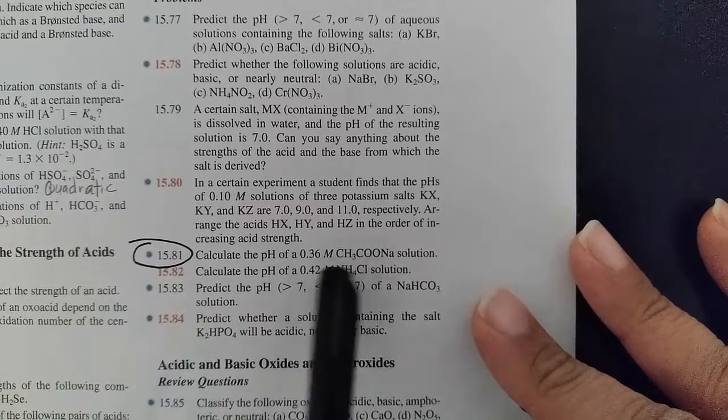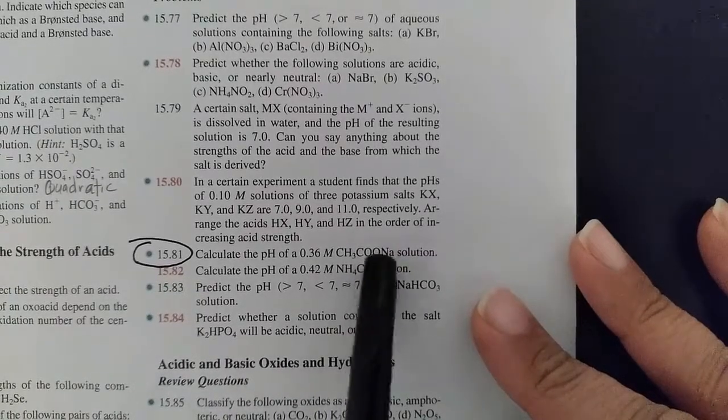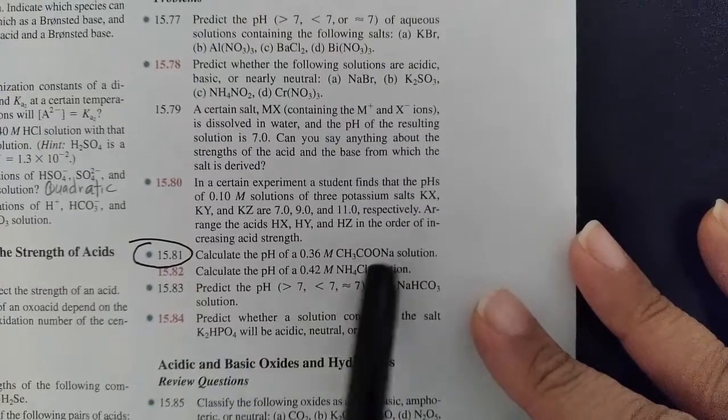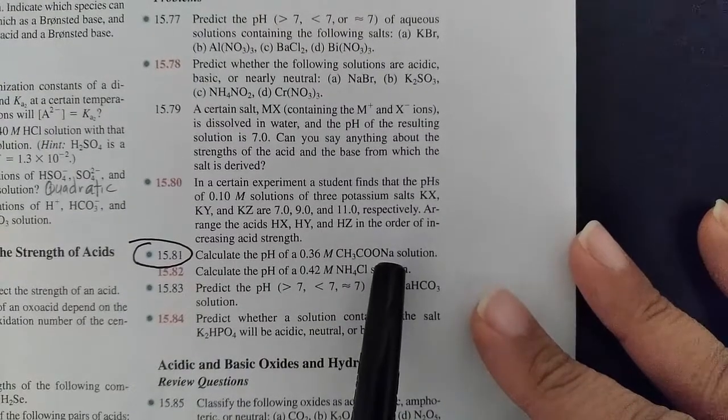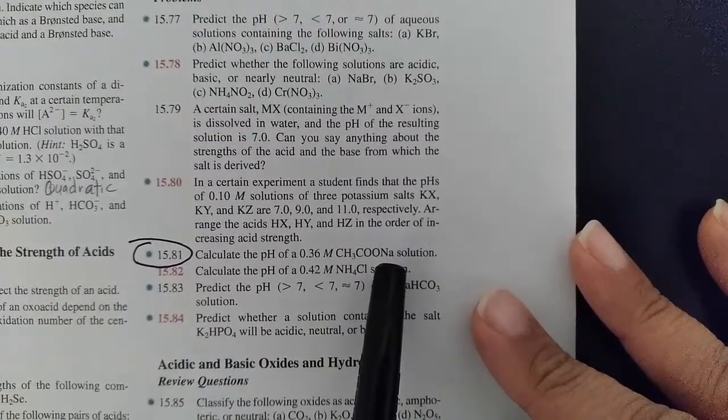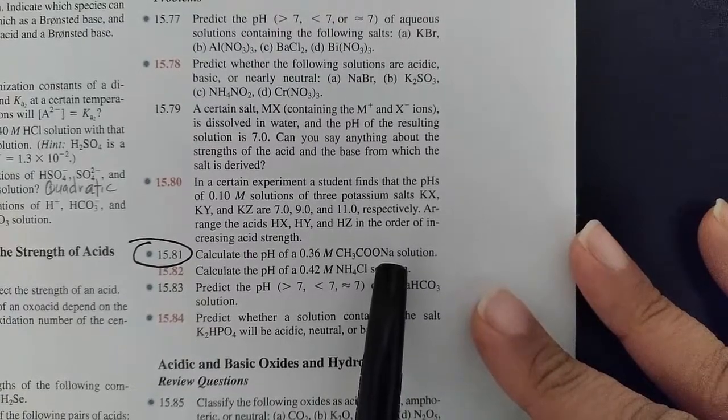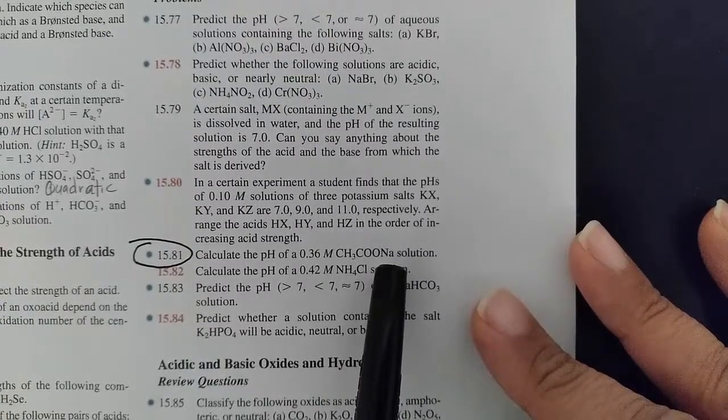In this video we'll calculate the pH of sodium acetate. The trick here is realizing that this is an ionic compound and the sodium ion Na+ is just the counter ion, also known as a spectator ion, so it's really not participating in anything.